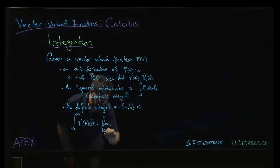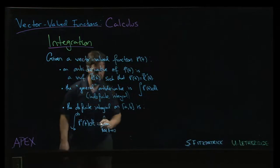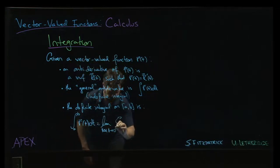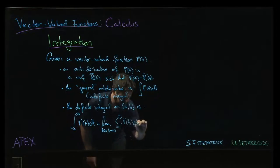the norm of delta t... So, the norm of a partition goes to 0 of the sum, i goes from 1 to n of not f. Ah, careful. r of ti times delta ti,